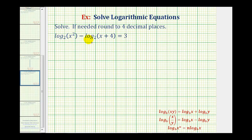We want to solve the given log equation and find the exact solution and the decimal approximation. To solve this log equation, the first step is to combine the two logarithms and then write the log equation as an exponential equation to solve for x.